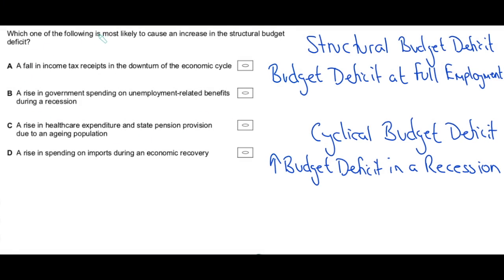So which one of the following is most likely to cause an increase in the structural budget deficit? Right, if it's me in the exam hall I'm definitely underlining structural budget deficit and on the side somewhere I'm going to be writing down, reminding myself what a structural budget deficit is and here it is. It is a budget deficit at full employment. So even when the economy is at full employment, the economy is at macro equilibrium, the government will never earn enough tax revenue to fully cover their government spending.